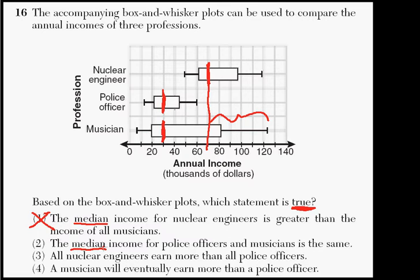The second one says the median income for police officers and musicians is the same. So again, I've marked the median over here for the police officers, and I marked the median for the musicians. And guess what? They are exactly the same. They're about $30,000 a year for the medians. So this one is true. We're done. It's right there.